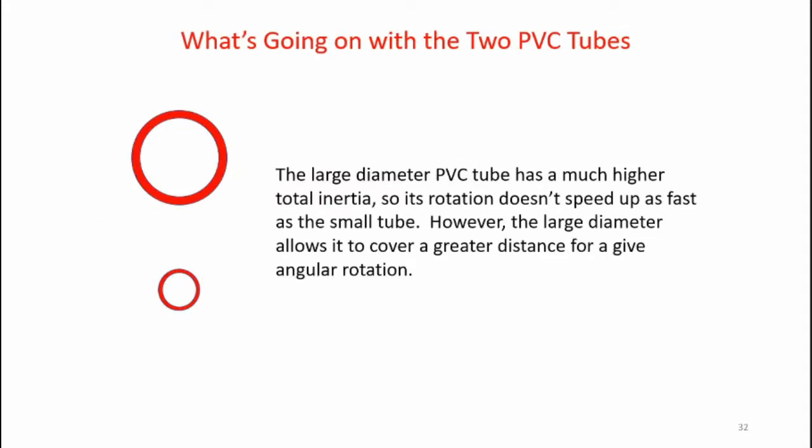The theoretical calculations in the experiment point out something quite interesting. The large diameter PVC tube had essentially the same velocity as the small diameter PVC tube. So what's going on here? The large diameter PVC tube had a much higher total inertia, so its rotation doesn't speed up as fast as a small tube. However, the large diameter PVC tube has a larger circumference, and thus covers a greater distance for a given angular rotation. In balancing out the circumference and the inertias, we ultimately get the same velocity in this particular case.